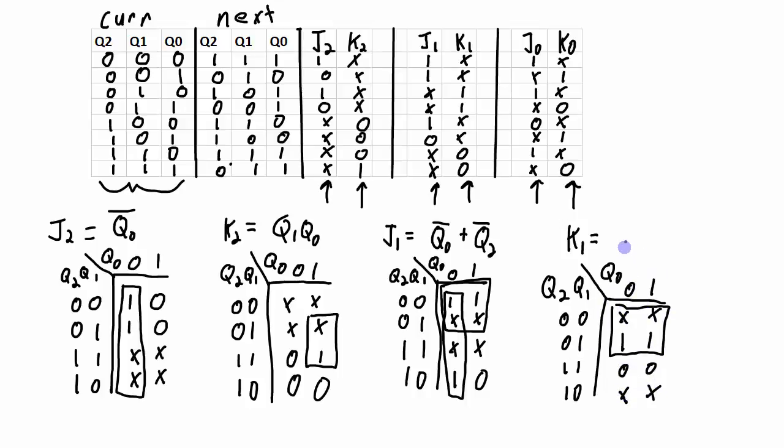And we get K1 is equal to not Q2. You can repeat the process for J0 and K0, but I won't do that all here. But what we end up with is J0 is equal to not Q2 or Q1, and K0 is equal to not Q0.